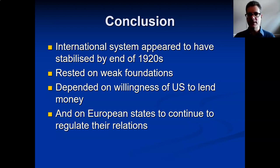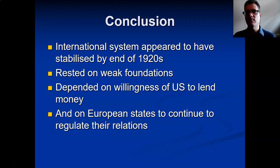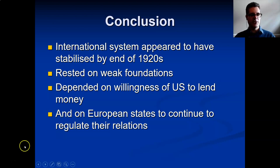To conclude: in the mid-1920s especially, it appeared that the international situation and the economic and financial situation were improving. But the problem was that it rested on weak foundations — essentially on the willingness and ability of the United States to provide credit to the Europeans and especially to Germany. Once this source of liquidity was turned off — which is what happened with the 1929 crash — inevitably the global and European economy was going to face very difficult conditions. We'll come back to that in more detail next week.